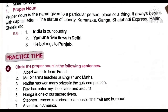Kisi particular person, place or thing ko jab hum naam dete hai, toh usko hum kya bolte hai? Proper noun. Jis bhi cheez ka proper name hota hai. For example, India is our country — India is the name of a country, so it is a proper noun. Also, proper noun is always written with a capital letter. Yamuna river flows in Delhi — Yamuna is the river name, written in capital letter, so it is a proper noun. Delhi is the name of a place, also a proper noun. He belongs to Punjab — Punjab is also a proper noun.